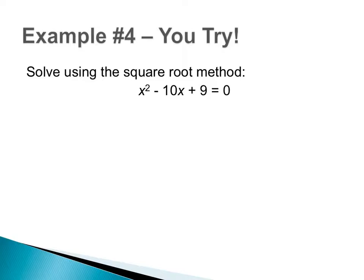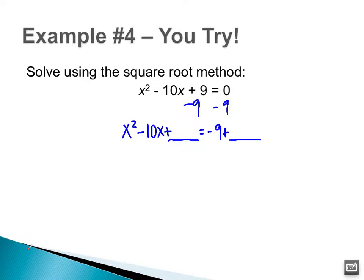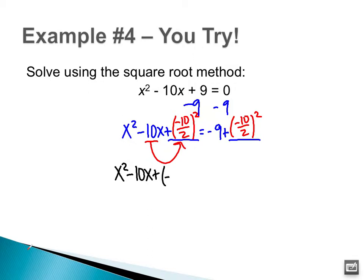Welcome back. First thing you should have done is move that 9 over to the other side — subtract 9 from both sides — leaving x² − 10x [space] = −9 [space]. To find out what to add, take the b term, negative 10, divide it in half and square it — same thing on the right side. Rewriting: x² − 10x + (−5)² = −9 + (−5)².